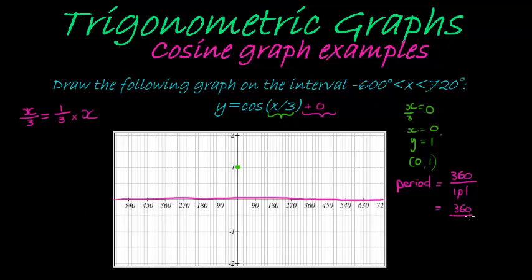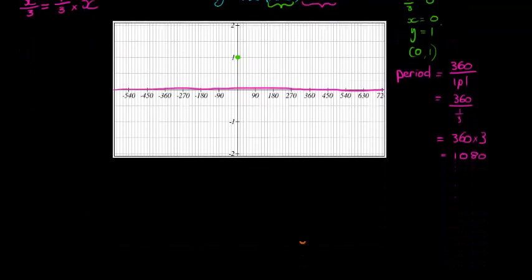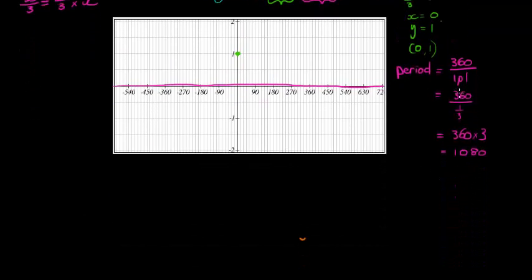So I'm going to divide 360 with a third. 360 divided by a third. Now again, the same applies here. Dividing with a third is the same as multiplying with 3. So 360 times 3 gives me, what is that? A hundred, a thousand and eighty. So my period is a thousand and eighty. Now that's way up here.